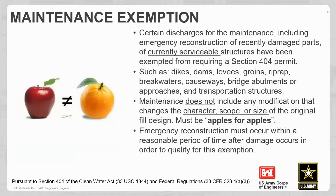Our maintenance exemption — we've got a photo of apples and oranges here. The maintenance exemption really is the replacement of a currently serviceable structure, and that replacement needs to be like-for-like, or apples for apples. It cannot be apples for oranges. For example, if you need to replace a 10-inch pipe, it needs to be replaced with a 10-inch pipe of similar character, scope, and size. You cannot replace it with a bigger structure outside of the original fill design.